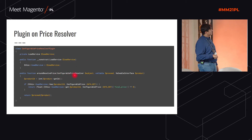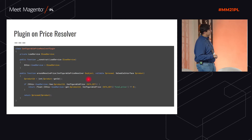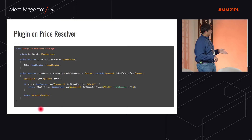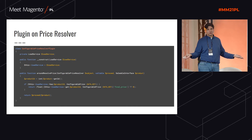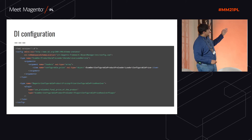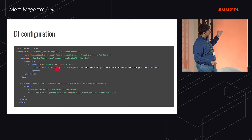Then we create a plugin around the price resolution for a configurable product, added to a configurable price resolver. We retrieve the product ID, use the load service has method, check our data key constant, and pass the product ID to check if there is data for it. If there's no data, we proceed with original functionality. If there is data, we get the final price value and return it as a float. That's basically all the customization needed to fix this performance issue. The DI configuration just adds the loaders into the load service.